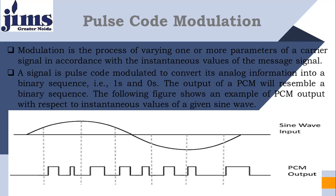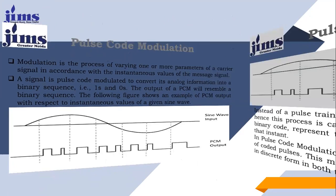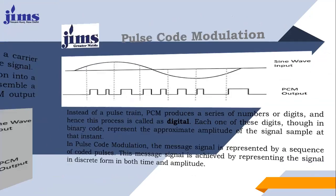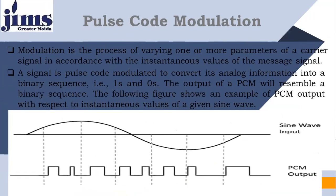As far as Pulse Code Modulation is concerned, in this particular process we change an analog signal into a digital signal. A digital signal contains information in the form of ones and zeros. The output of the PCM will be a binary sequence.